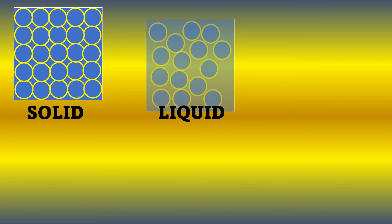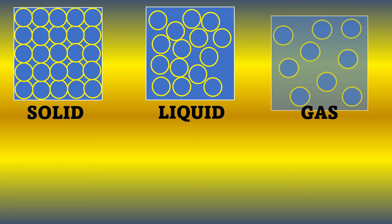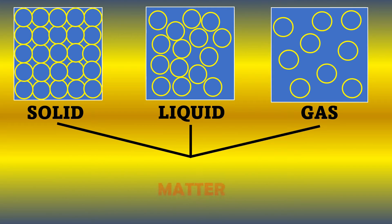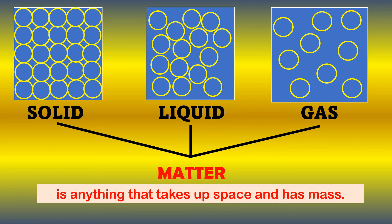Solid, liquid, and gas are examples of matter. When we say matter, it is anything that takes up space and has mass. Space refers to the spatial area it occupies, and mass means it has weight. We consider an object or substance as matter when it has these two characteristics: takes up space and has mass.